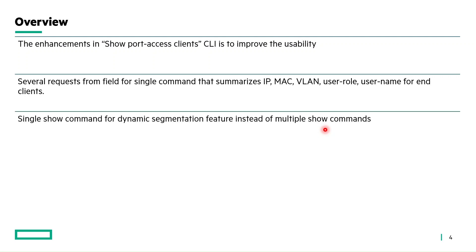Apart from the improvement in the show port access client show command, there has been a request for a single show command for dynamic segmentation features like UBT and VXLAN-based network tunneling. Previously, we were using multiple show commands to view the details of these dynamic segmentation clients. Going forward, we can have a single brief show command for those features.